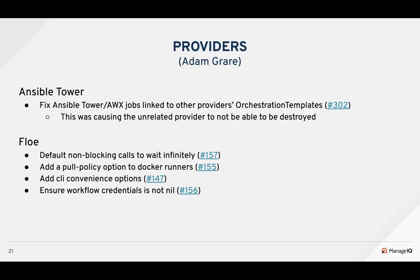For providers this sprint, a bug was fixed with Ansible Tower and AWX where jobs being run as orchestration stacks were being linked back to the playbook as an orchestration template ID. This caused issues when you had an actual record with that ID in the orchestration templates table, preventing destruction of seemingly random providers. A new foreign key was added to track that relationship properly, along with a data migration to clean up incorrect values. Additionally, non-blocking calls that had a default timeout of five seconds were changed to block indefinitely by default.